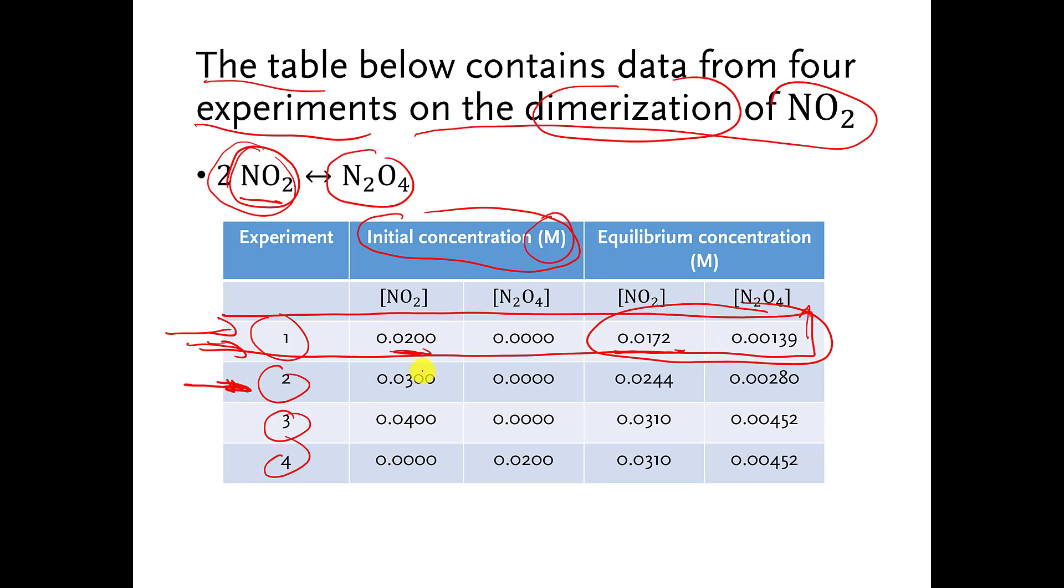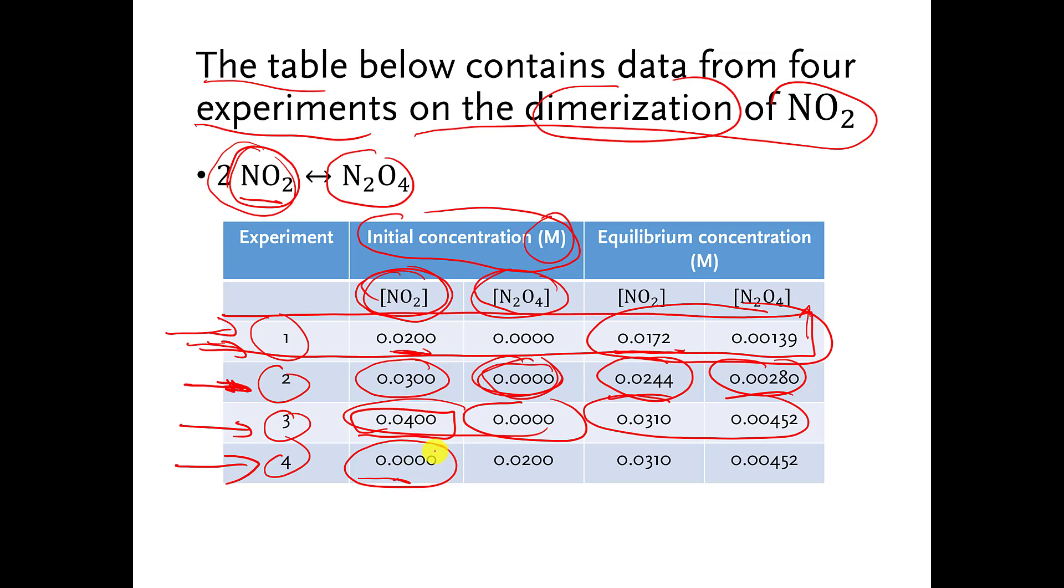You can also do this for experiment 2, where they started with different concentrations of NO2. The concentration of N2O4 was again 0. The equilibrium concentrations were something different. You can do the same thing for experiment 3, where beginning concentrations, certain equilibrium concentrations, and even experiment 4, where things got flipped. In experiment 4, the concentration of NO2 starts out at 0. So there's none of the stuff on the left side. And you start out with a certain amount of stuff on the right side. So you have some N2O4. And the reaction runs backwards until it hits equilibrium. And you end up with certain equilibrium concentrations for experiment 4 as well.